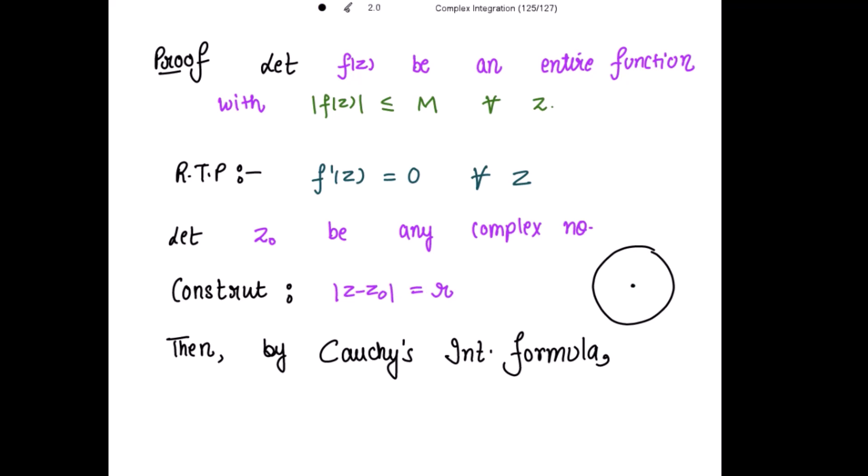So this is the circle that is centered at z_0 having the radius r. Then by Cauchy's integral formula we know that the first derivative of the function at this z_0...